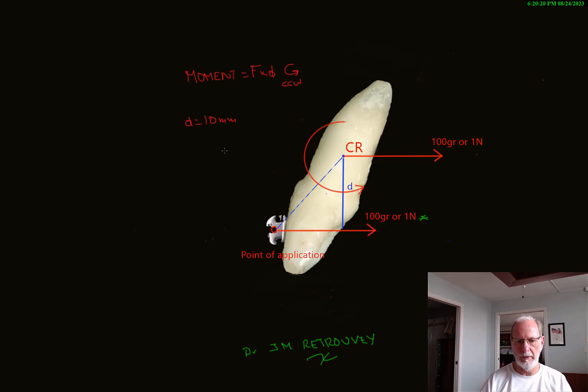So what is to be retained by this? It's pretty evident that at the point of application, there is a simple force. But this simple force being away from the center of resistance, this is at the bracket, remember, will have the effect of having a simple force translated to the center of resistance.